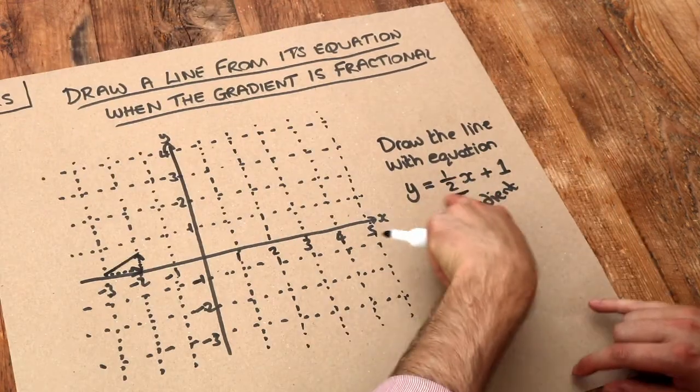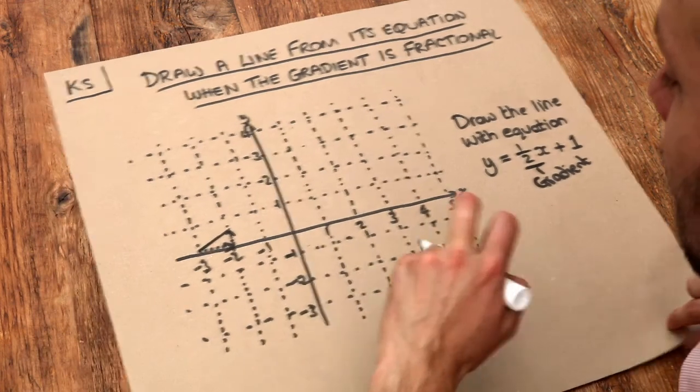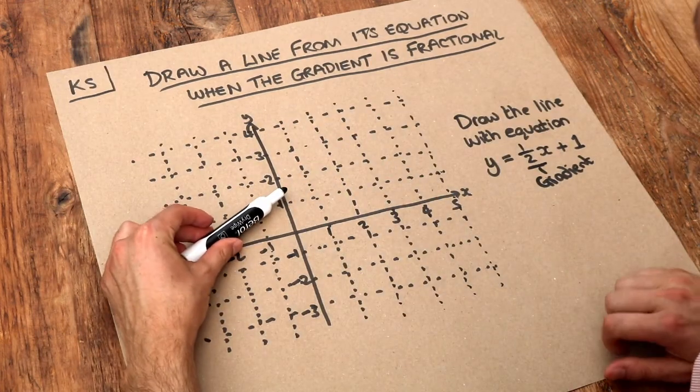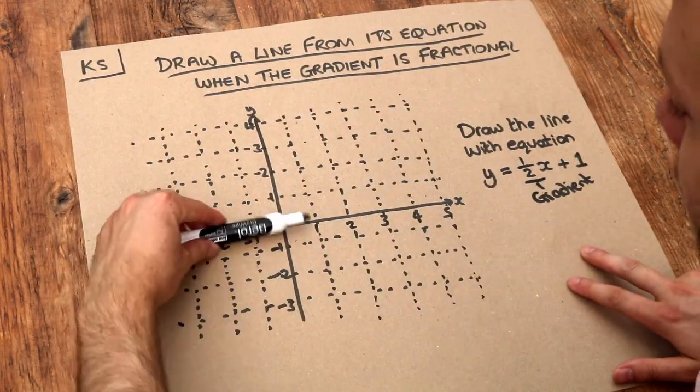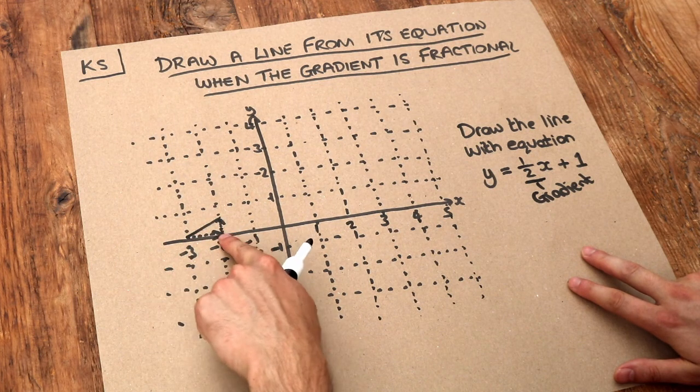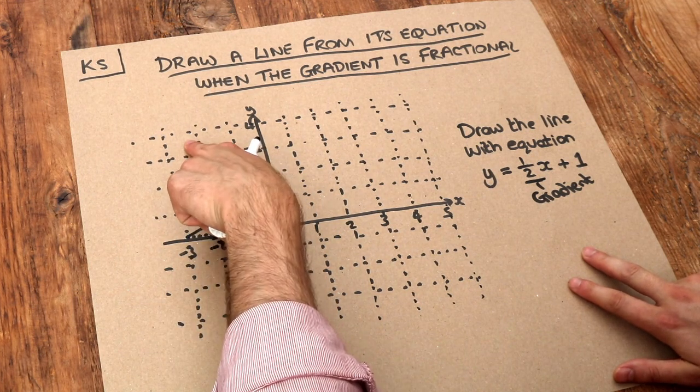When you have a fractional gradient like this and it's less than 1, it's going to be relatively shallow. Whereas if I had a large gradient like 3, it's going to be going up very steeply because each time you go across 1, you'd be going up 3.